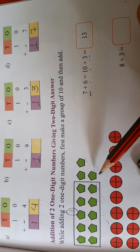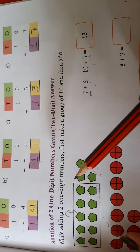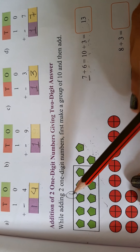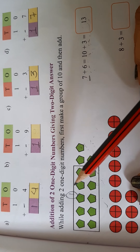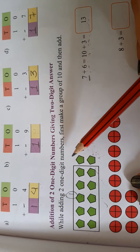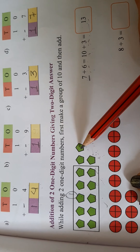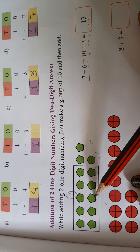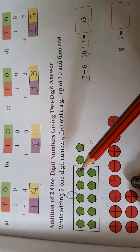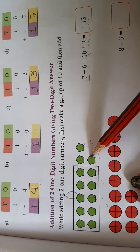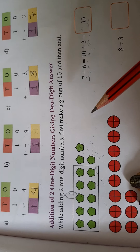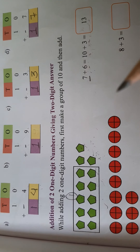10 plus 3 is 13. How many total shapes are here? Let's count: 1, 2, 3, 4, 5, 6, 7, 8, 9, 10, 11, 12, 13. So 13 shapes are here. 7 plus 6 equals 13.